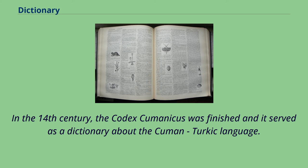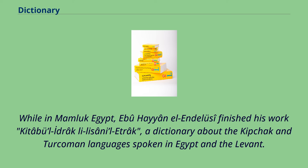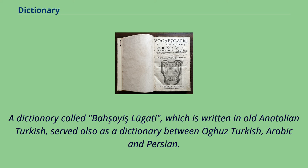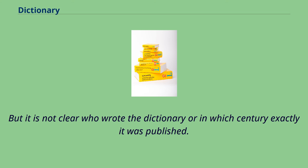In the 14th century, the Codex Cumanicus was finished and it served as a dictionary about the Cuman Turkic language. While in Mamluk Egypt, Abu Hayyan al-Andalusi finished his work Kitab al-Idrak li-Lisan al-Atrak, a dictionary about the Kipchak and Turkoman languages spoken in Egypt and the Levant. A dictionary called Besasayis Lugati, written in Old Anatolian Turkish, served also as a dictionary between Oghuz Turkish, Arabic, and Persian, though it is not clear who wrote it or in which century it was published.